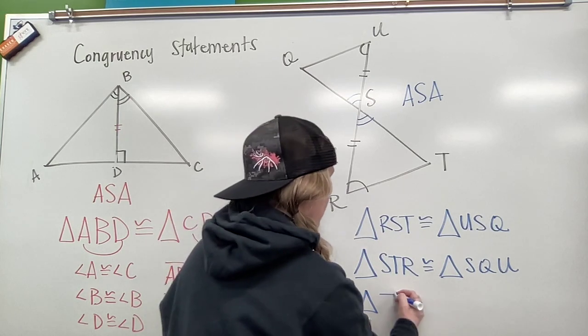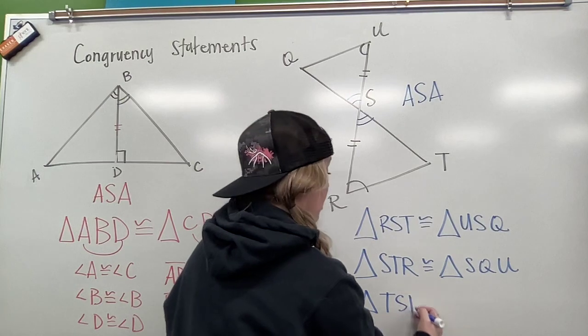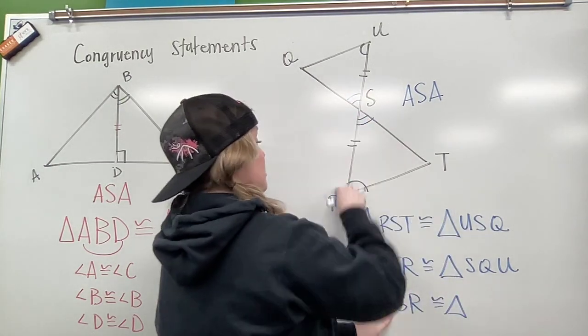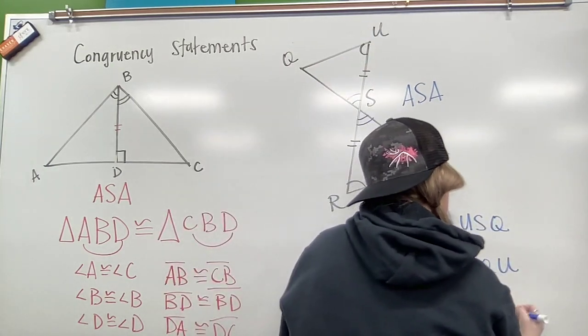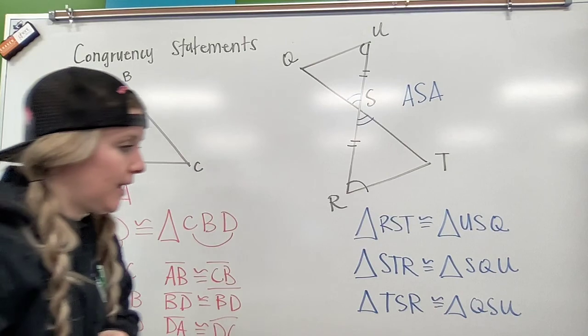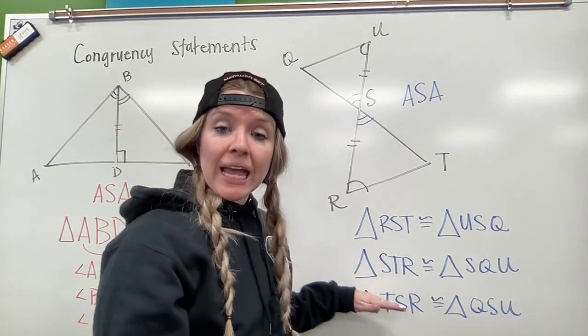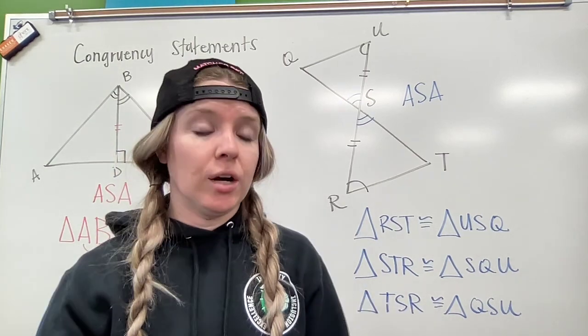And our last order here, I could do T-S-R. We've got different options here. So T-S-R, that's going to be Q-S-U. All right. Again, just a visual so you understand that as long as your first triangle matches the order of your second triangle, you are good to go.